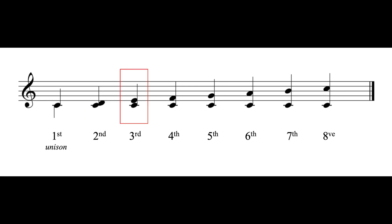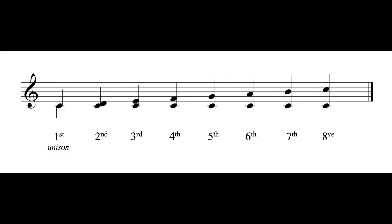Let's try this one — C to E. Let's count up: C, D, E. We call it a third. C to F is a fourth. C to G is a fifth. And so on with the sixth and the seventh.